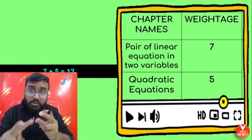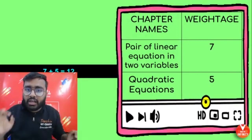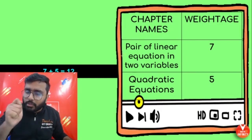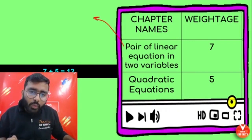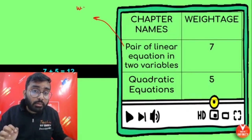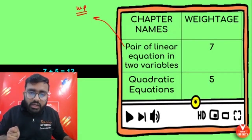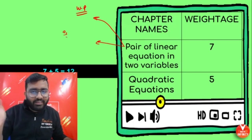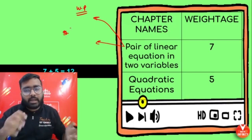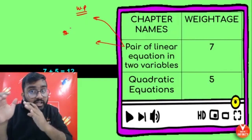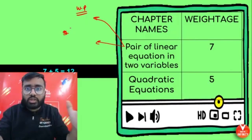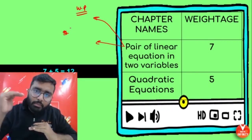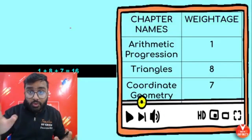For Pair of Linear Equations in Two Variables, remember two things: a word problem will definitely come — that's certain. Also remember the condition A1/A2 = B1/B2 = C1/C2 for consistency. You've already studied quadratic polynomials, and 5 marks is going to come from here. Everyone should know this.